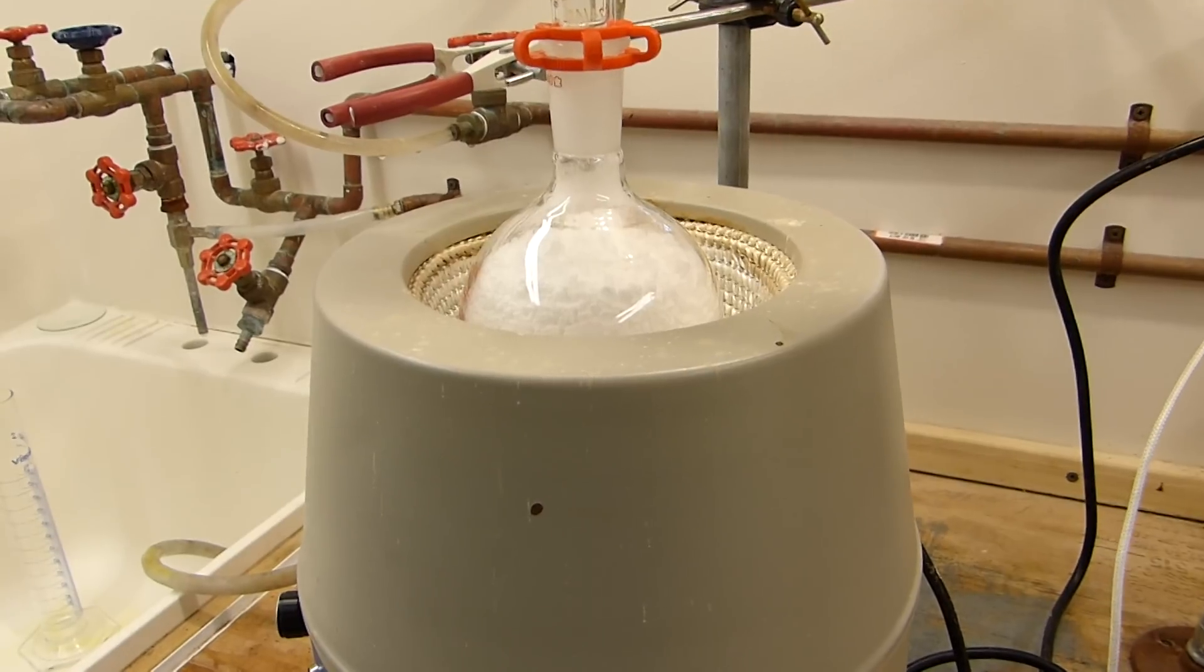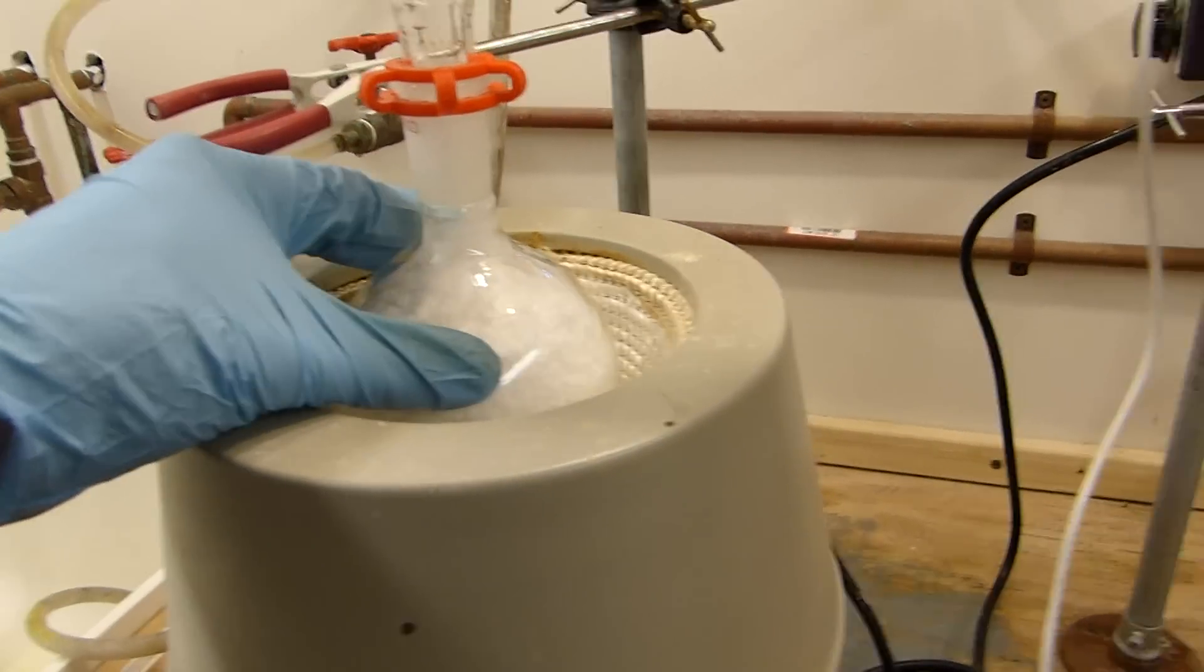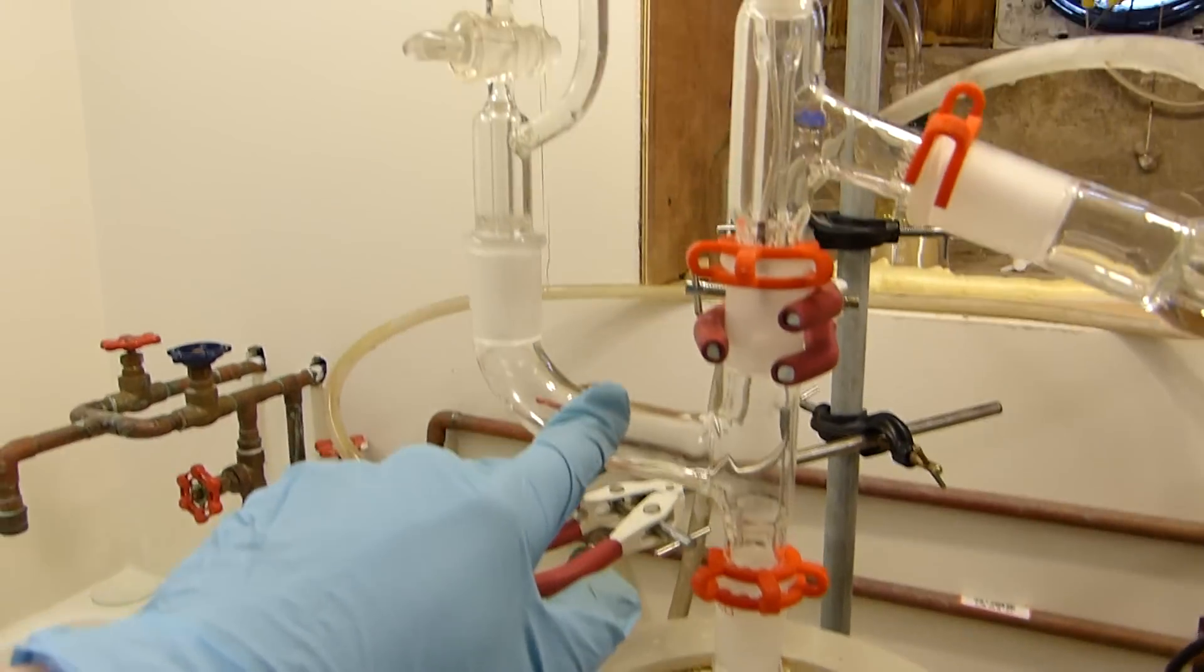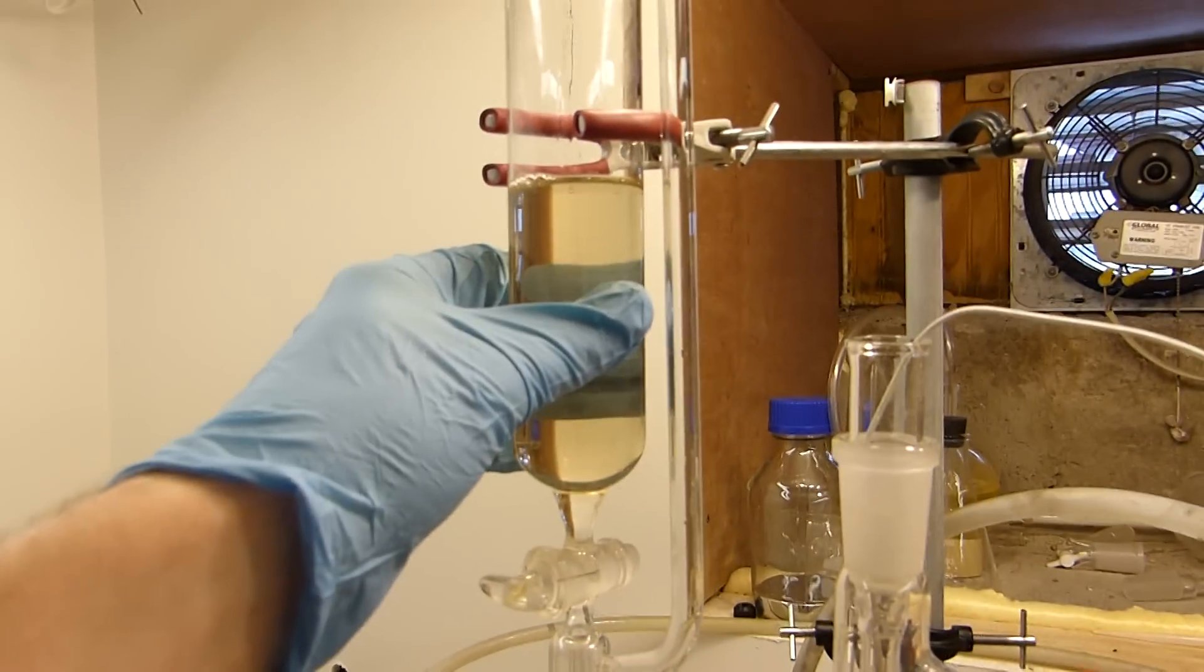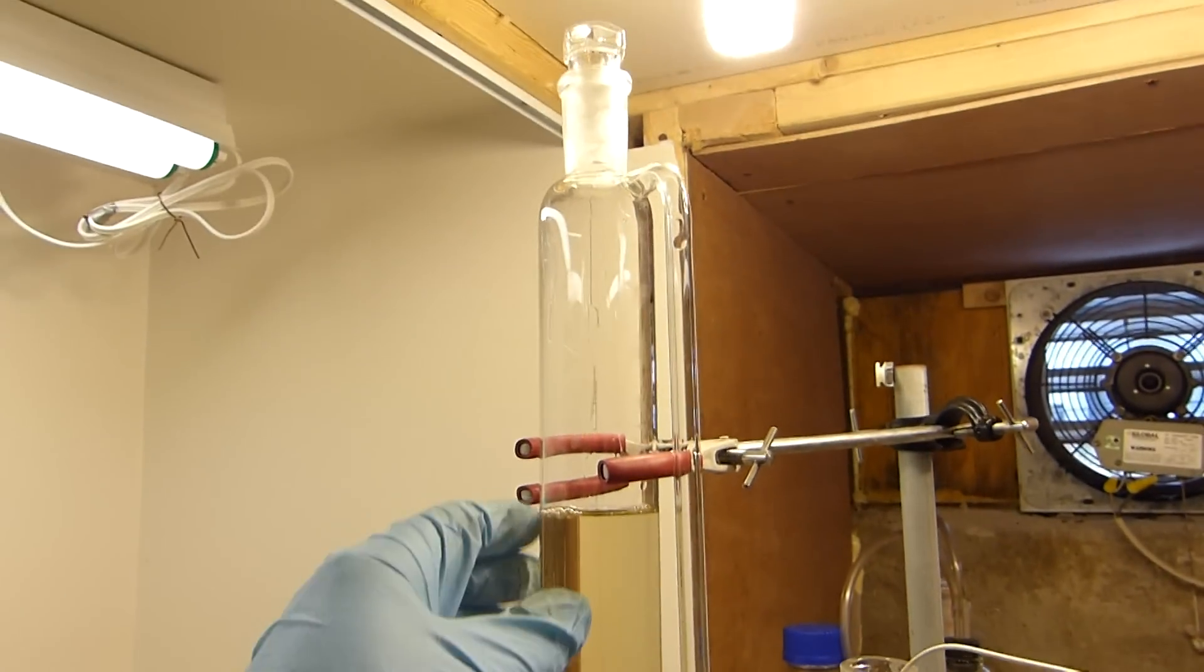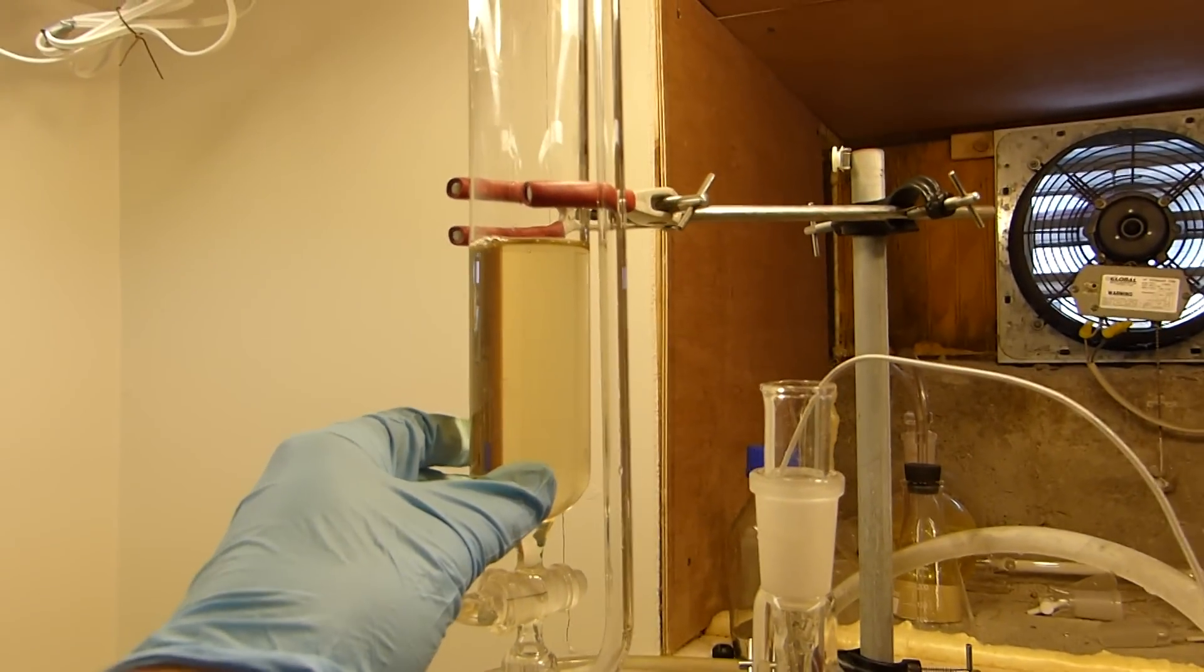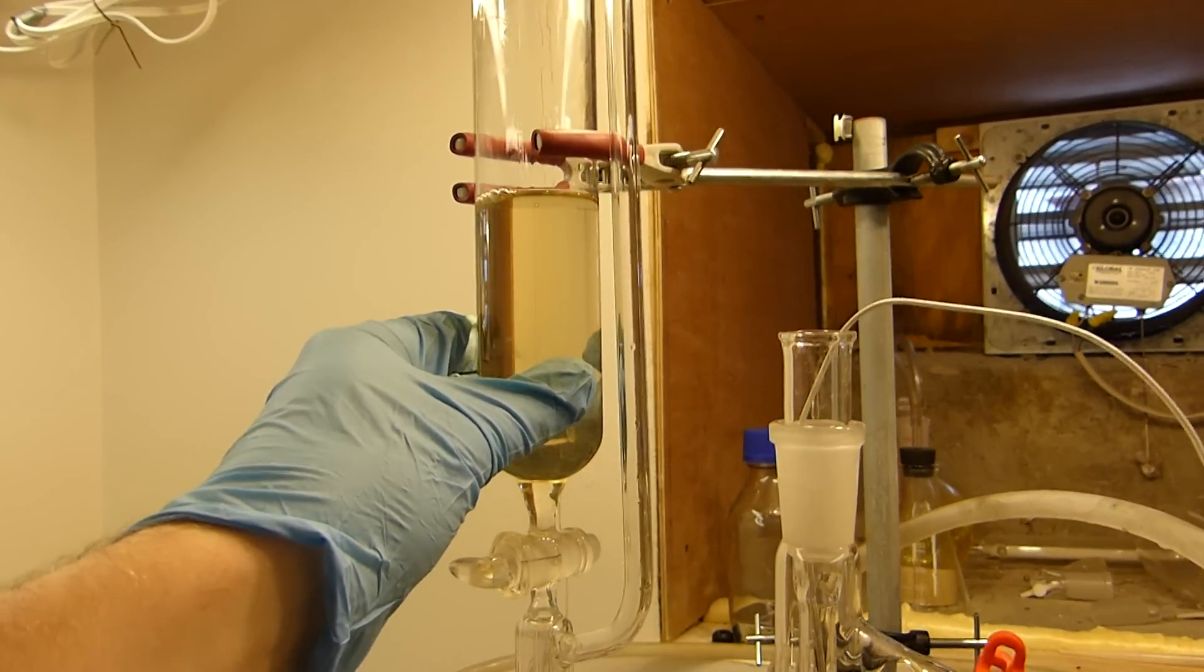The apparatus is now set up. I have the 500 milliliter round bottom flask with the anhydrous sodium acetate in it down here in a heating mantle. The claisen adapter on top of that, with in one arm a flask or an addition funnel of concentrated sulfuric acid.